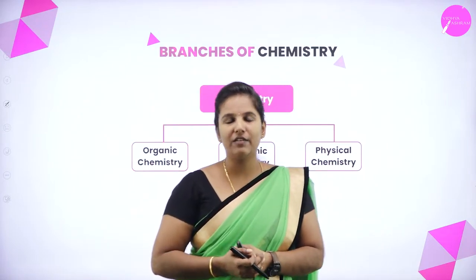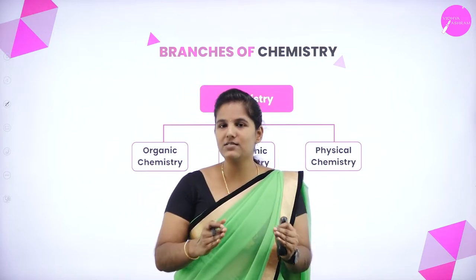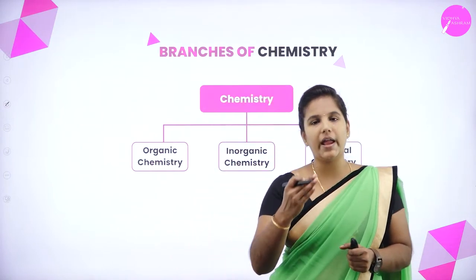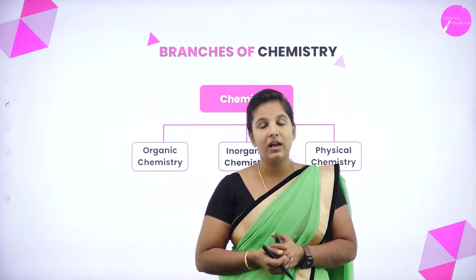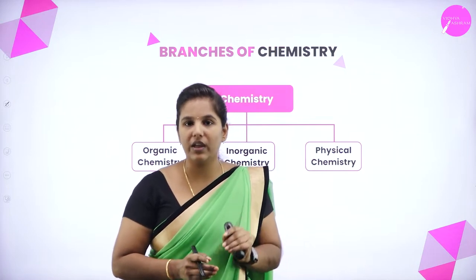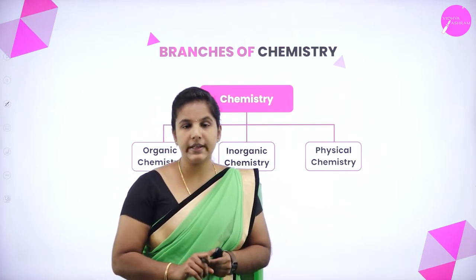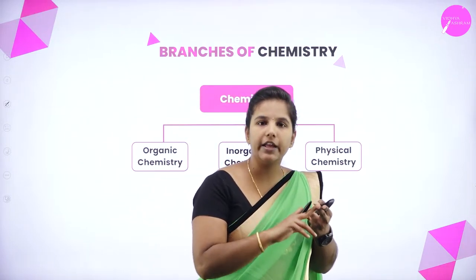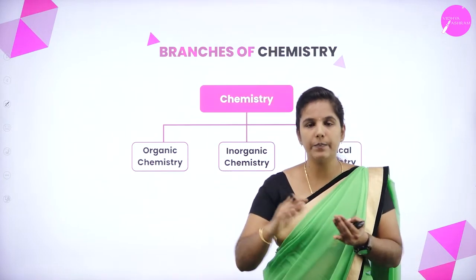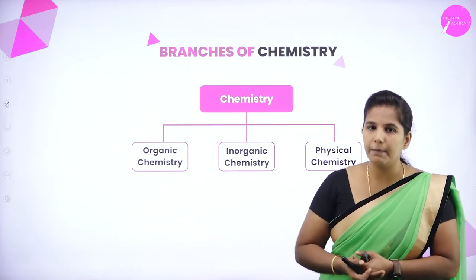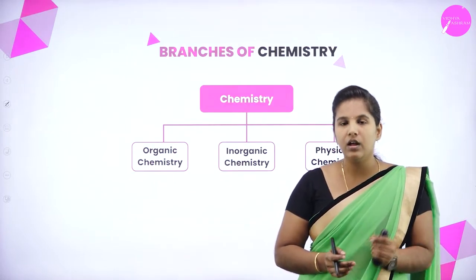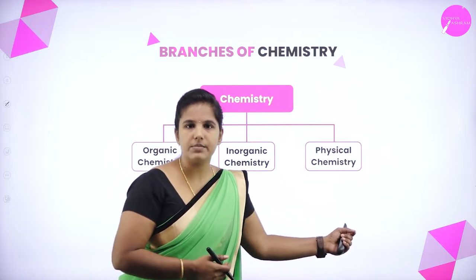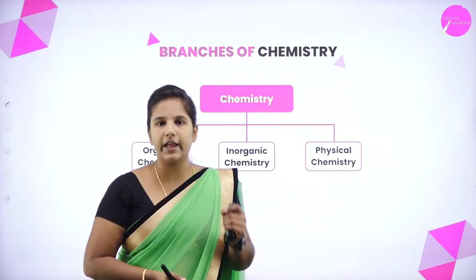We already know that chemistry is a branch of science where we study the composition, structure, and properties of matter. Chemistry has five different branches. Can you recall them? The first is organic chemistry, then inorganic chemistry, physical chemistry, analytical chemistry, and biochemistry. Remember, for your pre-university journey you have only three branches: physical chemistry, organic chemistry, and inorganic chemistry.